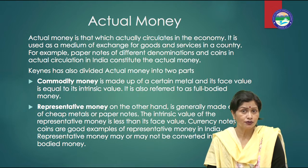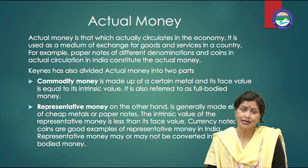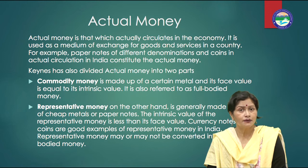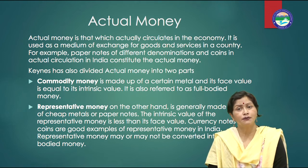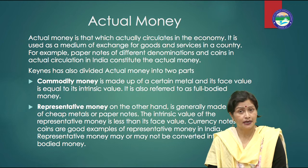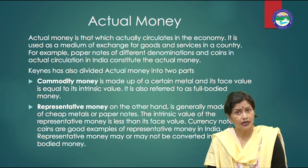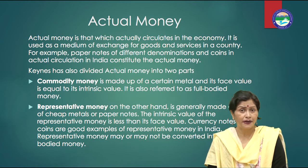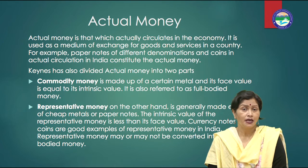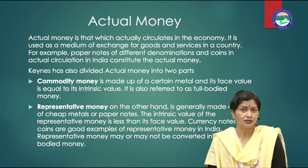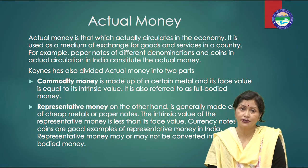Generally, actual money and money of account are the same for a country. However, sometimes actual money may be different from the money of account. For example, rupee and paise is the money of account in India, but in real practice, one paise coin is nowhere visible.